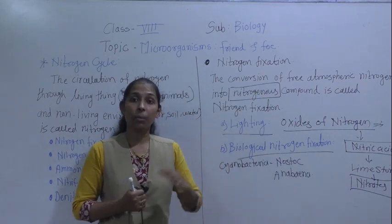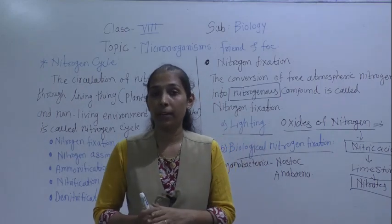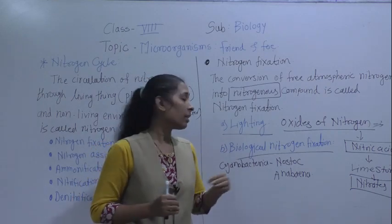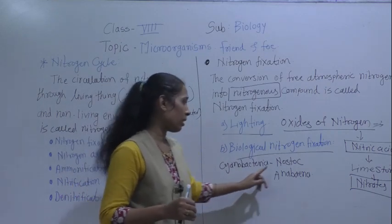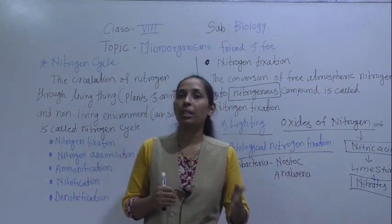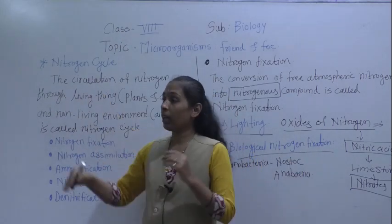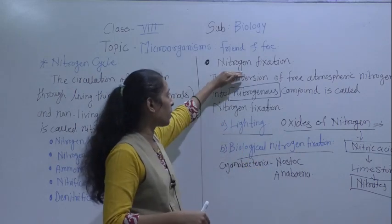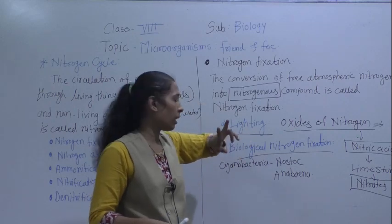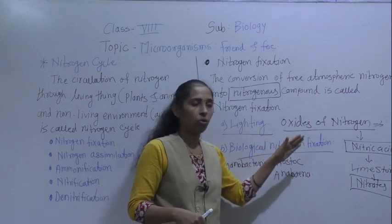Rhizobium bacteria helps to convert atmospheric nitrogen into nitrogenous compounds. Additionally, there are certain cyanobacteria such as Nostoc and Anabaena. These bacteria also help to fix atmospheric nitrogen. So from the nitrogen cycle, we have discussed the first step — nitrogen fixation — which happens by two ways: lightning and biological nitrogen fixation.